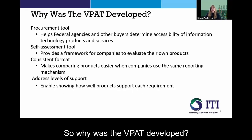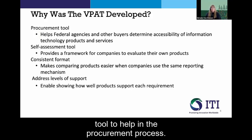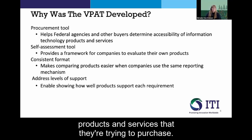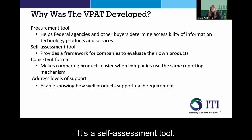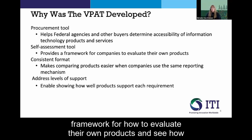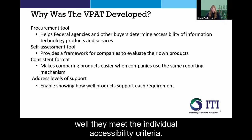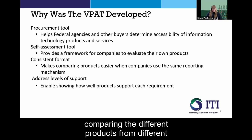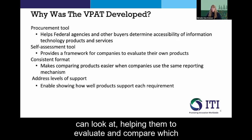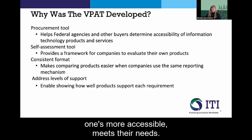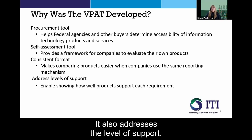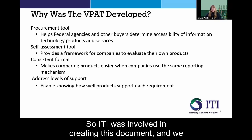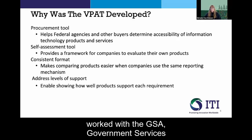Why was the VPAT developed? It's a tool to help in the procurement process — it helps federal agencies and other buyers determine the accessibility of IT products and services they're trying to purchase. It's a self-assessment tool that vendors can use as a framework to evaluate their own products against individual accessibility criteria. It also provides a consistent format for reporting, so procurement staff comparing products from different companies have a standardized report to evaluate and compare accessibility. It enables showing the level of support for each requirement, guideline, or standard. ITI created this document in collaboration with the GSA — the Government Services Administration.